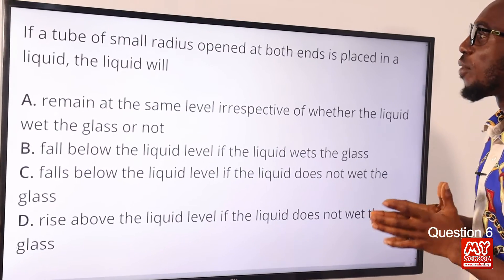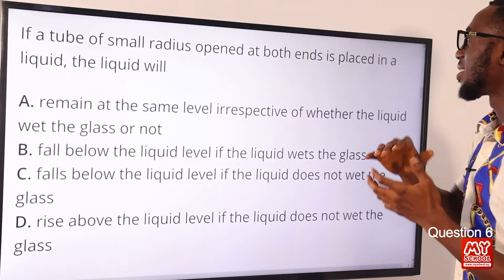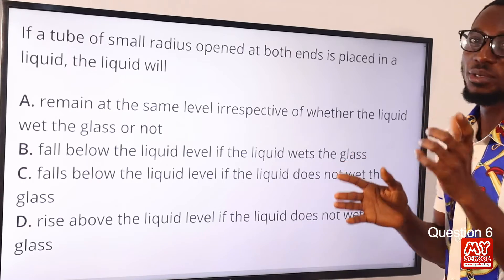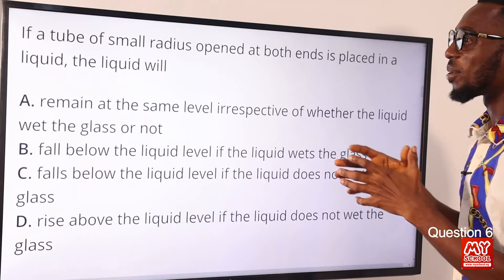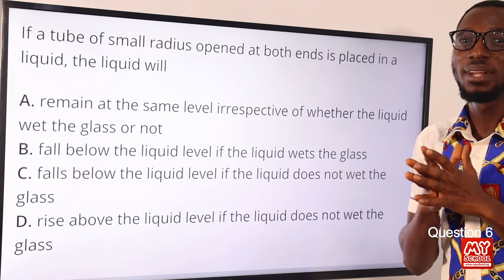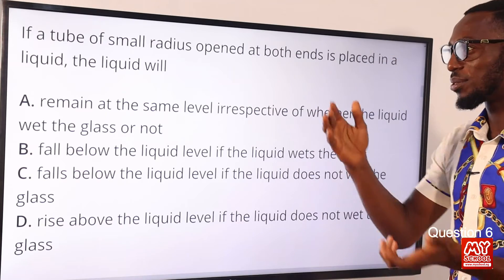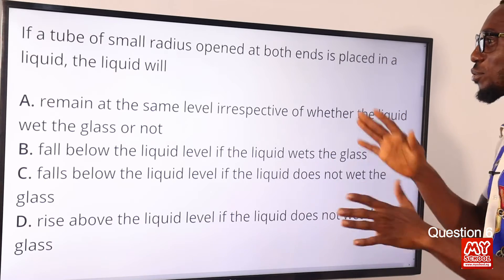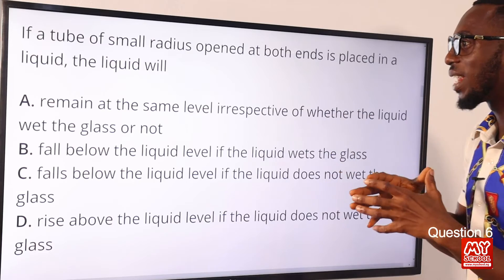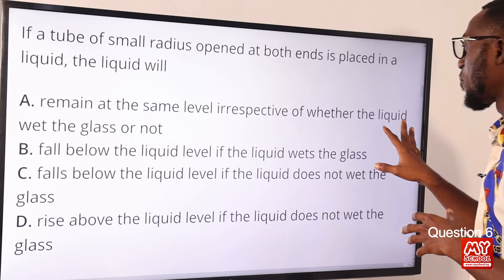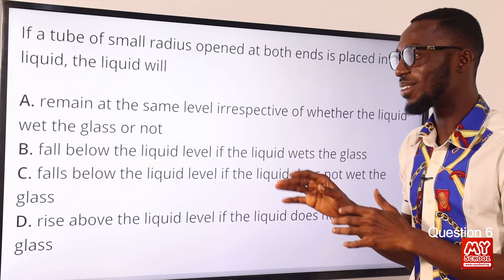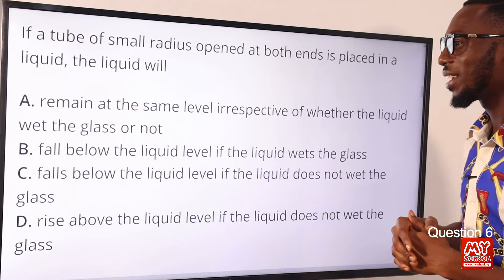Question 6. If a tube of small radius opened at both ends is placed in a liquid, the liquid will do what? This is a concept on capillarity or capillary action, the tendency of a liquid to rise or fall in a narrow tube. So let's go through all of the statements. The liquid will remain at the same level irrespective of whether the liquid wets the glass or not. This is wrong.